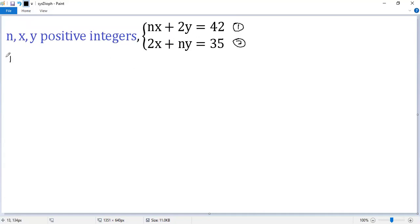So let's denote this as 1 and that as 2. So 1 plus 2, we get n plus 2 times x, n plus 2 times x, plus n plus 2 times y, the right side, 77.